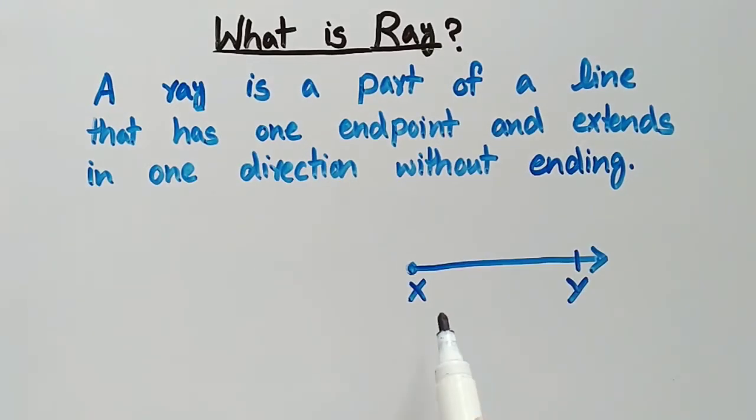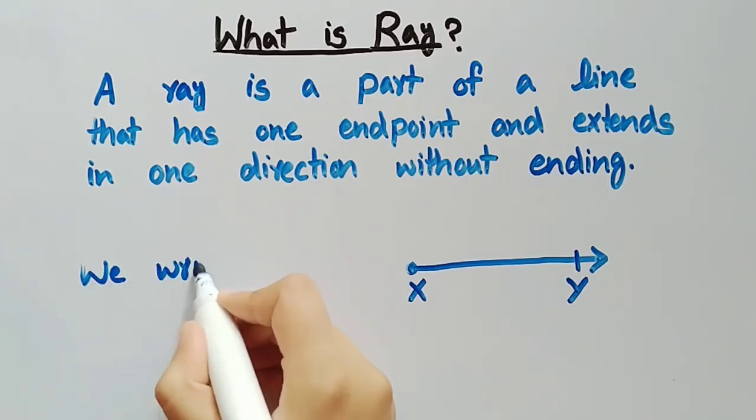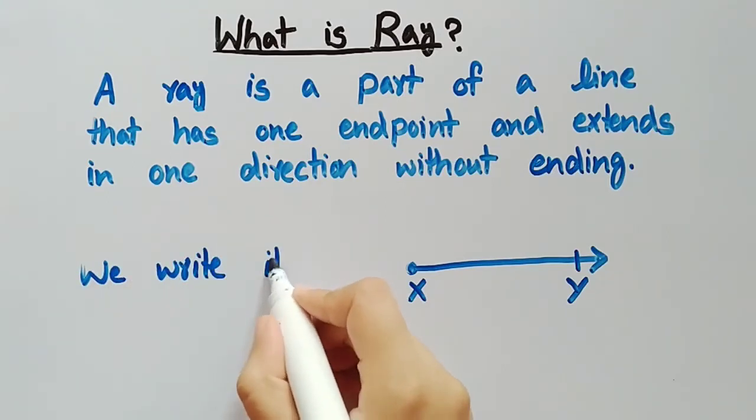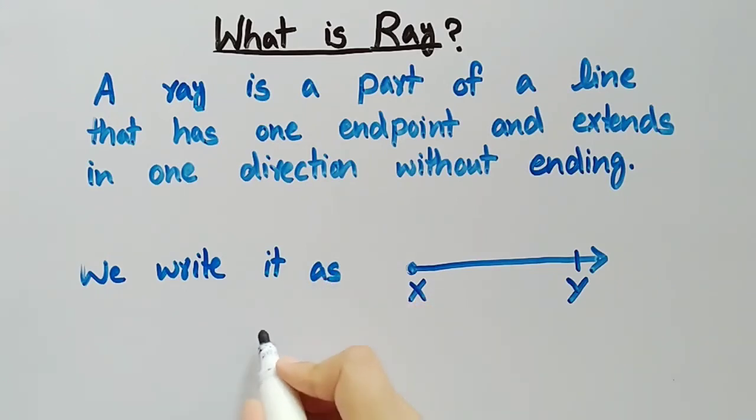Here this is the ray XY and we write it as XY and an arrow symbol above XY which represents the ray XY.